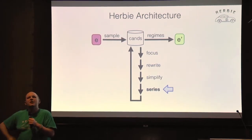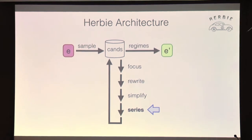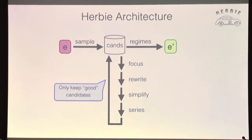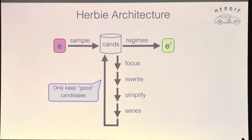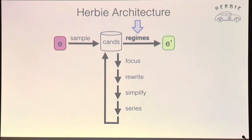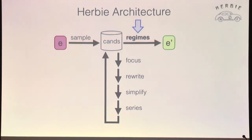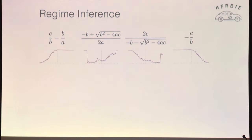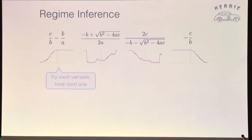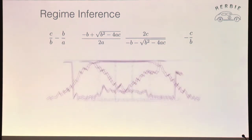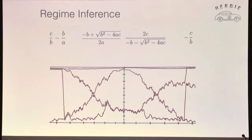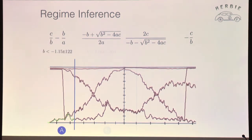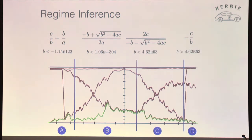We generate a bunch of different alternate ways of computing the real expression, keeping the good candidates — those that are best at at least one input point. Then we combine all those good candidates into one single expression. We take all the candidates, overlay their error graphs on each other, and walk on the bottom. We developed a dynamic programming technique that does exactly that to discover the right branch points. Doing this, we're able to solve a bunch of classic problems from numerical methods textbooks — our favorite examples come from Hamming's book on numerical methods for scientists and engineers.